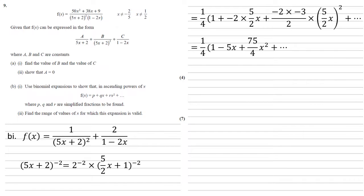Simplifying the brackets gives us 1 minus 5x plus 75 over 4x squared, then times by the quarter, which has come from that 2 to the minus 2. We get a quarter minus 5 over 4x plus 75 over 16 times x squared.